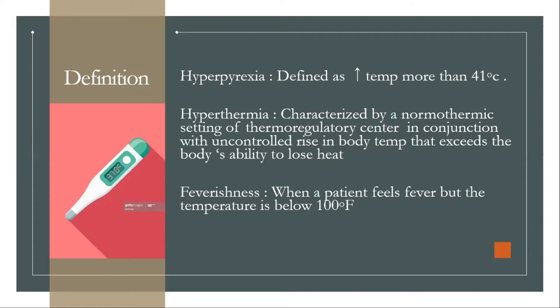Hyperthermia is characterized by a normothermic setting of the thermoregulatory center in conjunction with an uncontrolled rise in body temperature that exceeds the body's ability to lose heat. Fever richness is when a patient feels fever but the temperature is below 100 degrees Fahrenheit.